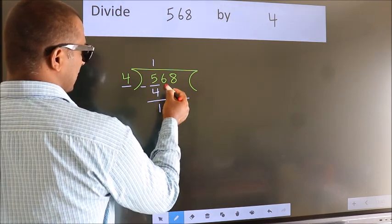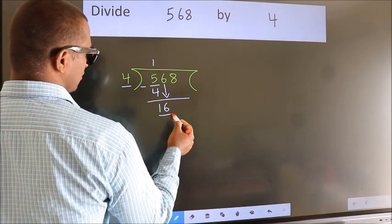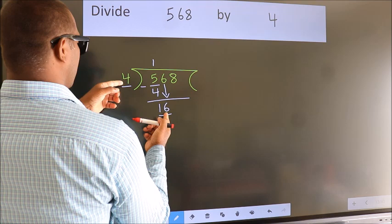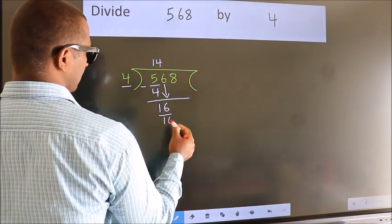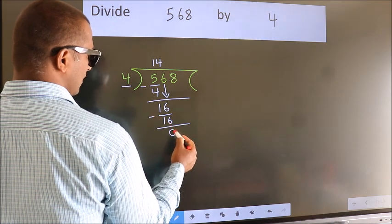After this, bring down the beside number. So, 6 down. So, 16. When do we get 16? In 4 table, 4 fours 16. Now we subtract. We get 0.